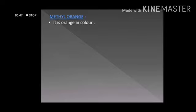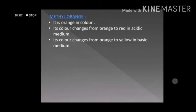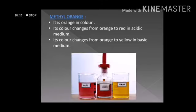Another important synthetic indicator is methyl orange. The color of methyl orange, as the name indicates, is orange. But it shows a color change in both bases and acids. If the color of methyl orange changes from orange to red, the liquid is acidic in nature. And if the color changes from orange to yellow, the liquid is basic. This figure also helps us understand the same.